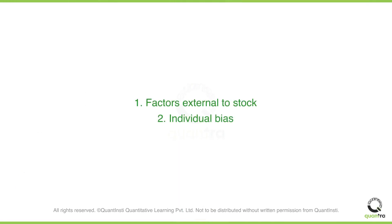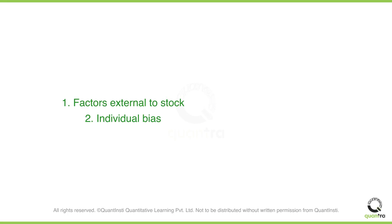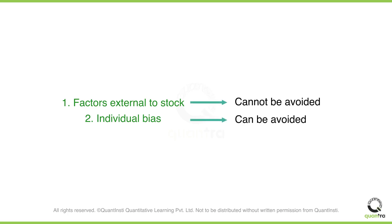In summary, there can be two reasons for technical analysis to fail. One is external factors like Fed rate hikes, unexpected events, and declaration of war. The second reason is an internal bias, which leads traders to select those indicators which reinforce their perception. External factors cannot be avoided, but we can take measures to avoid individual bias.